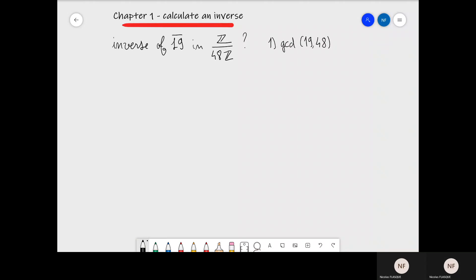Here is an example of calculating the inverse of an element in Z over nZ. The element is 19 bar and we are looking for its inverse in Z over 48Z.